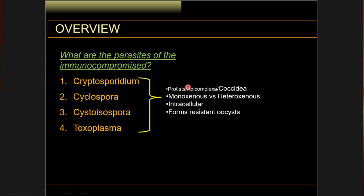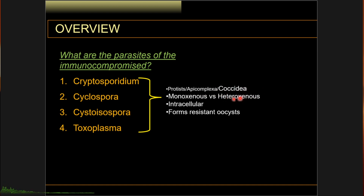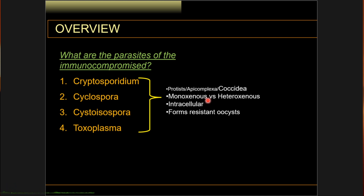As mentioned, we will be focusing on these four coccidia, and they all belong to the super-classification of protists, belonging to the phylum Apicomplexa, class Coccidia. Some of them are monoxenous and some of them are heteroxenous. Monoxenous parasites have only one host — these would include Cyclospora, Cystoisospora, and Cryptosporidium.